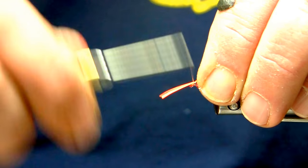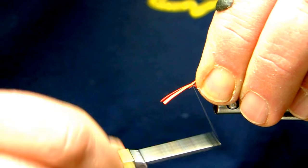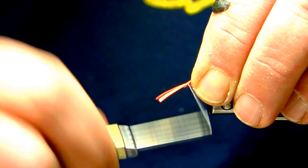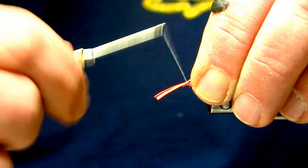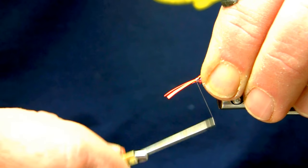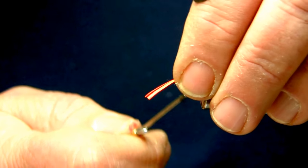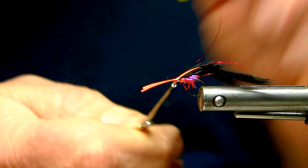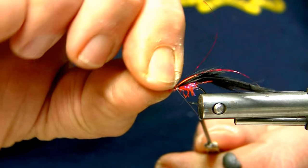It's a very simple, easy pattern to tie. And now I'll just build a small head, bring the thread to the front, behind the hook eye, pull good and tight. And that will cut my biets pretty much.